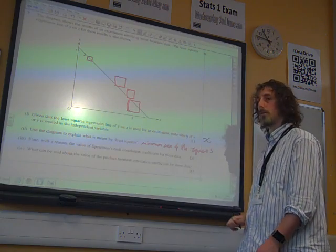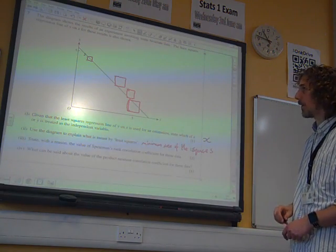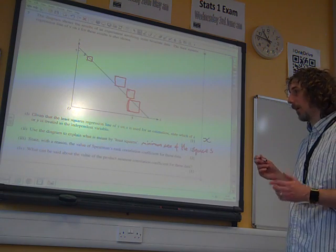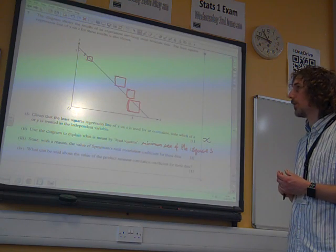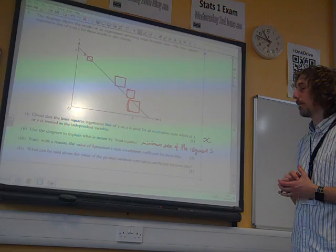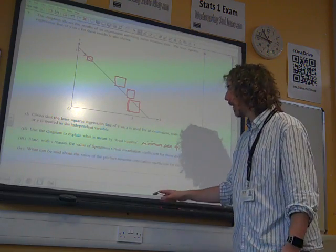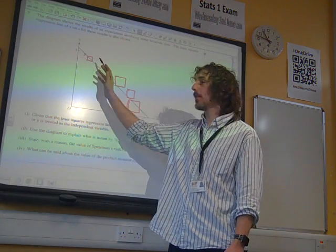So, the squares that we draw. Right. Now, I've created a slight problem for myself now because I can't see all of the crosses that were on there to answer the next part. But state with a reason the value of Spearman's rank correlation coefficient for these data. I think we can just about see it enough, can we? To be able to say, as x increases, these are in sequence.